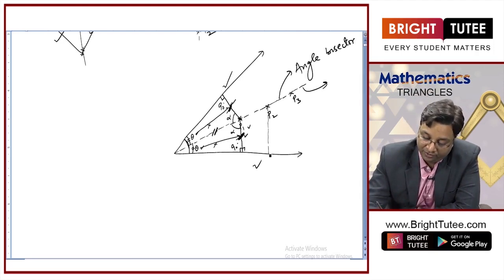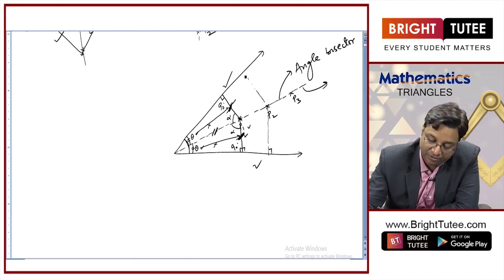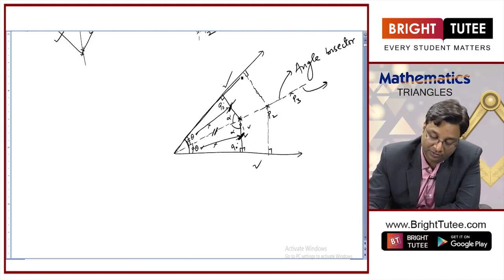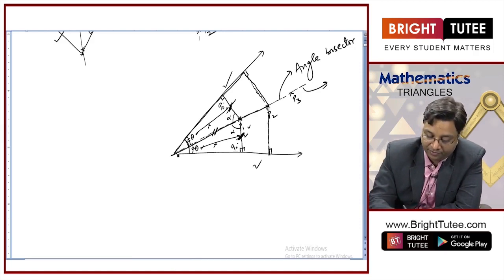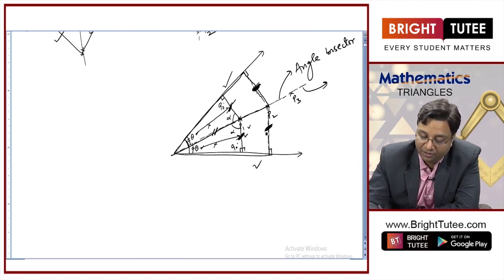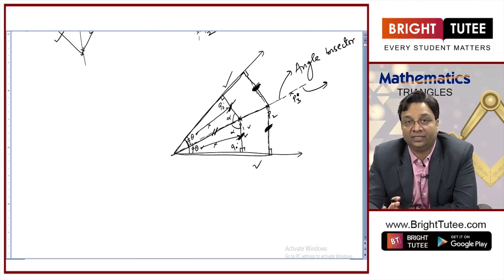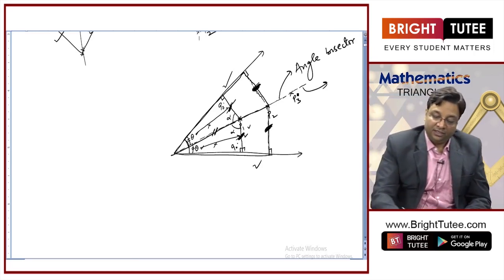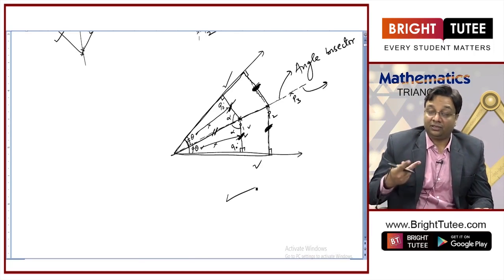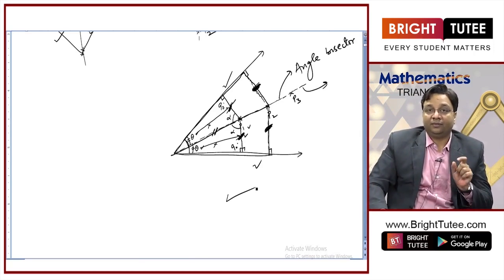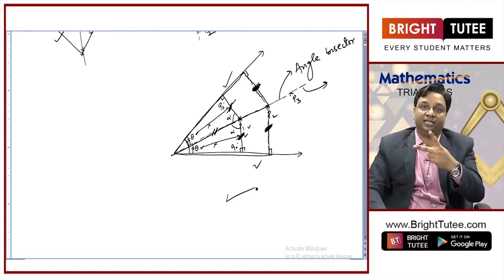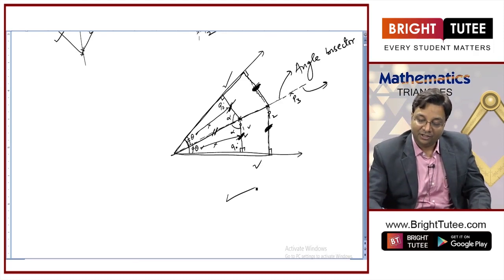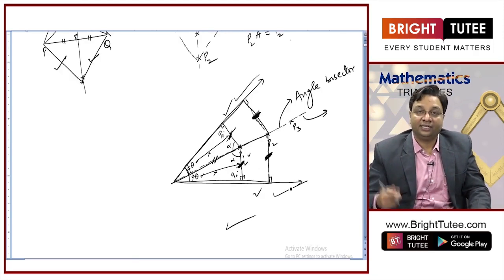Similarly, for any other point P2, if you drop a perpendicular to each arm, by the same logic these two triangles are congruent, and this distance equals this distance. So any point on the angular bisector is equidistant from both arms of the angle. Conversely, the collection of all points equidistant from two arms of an angle lies on the angular bisector of that angle.